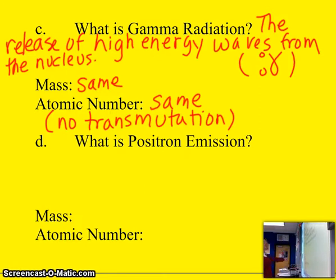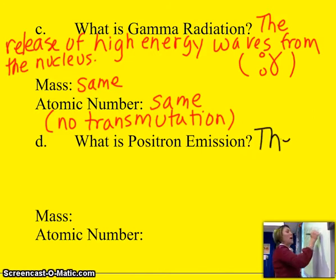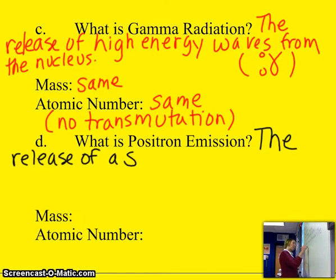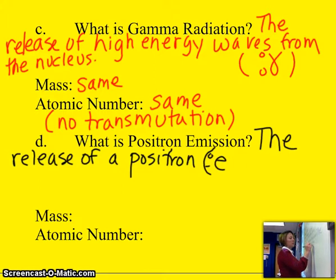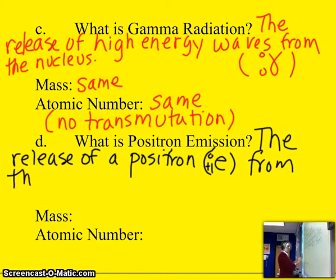And then finally, positron emission is the release of a positron. Now, again, a positron is an E-0-plus-1 substance. And you may be wondering how a positron gets emitted from the nucleus because perhaps you know that only protons and neutrons were found in the nucleus.